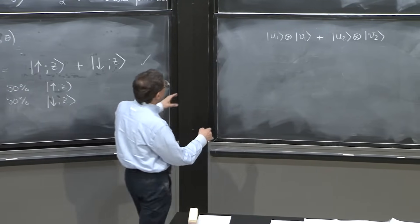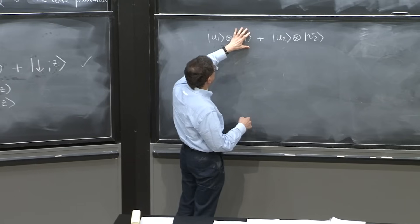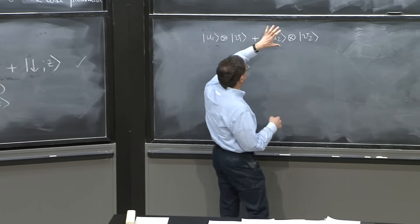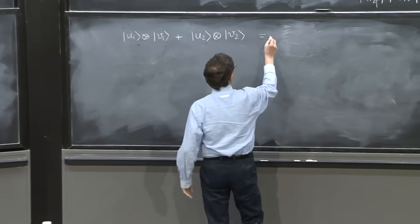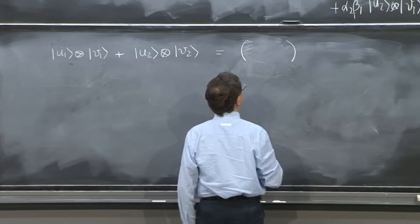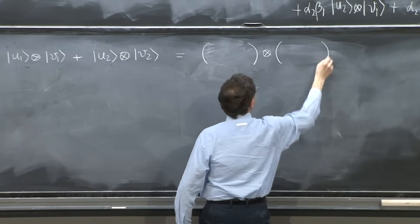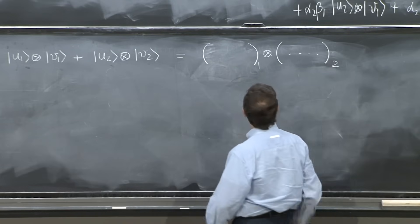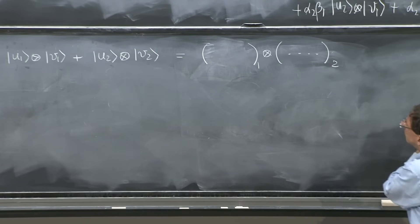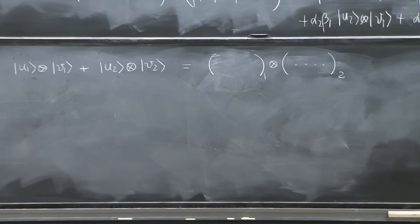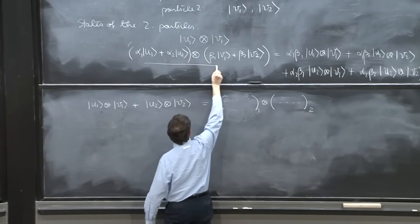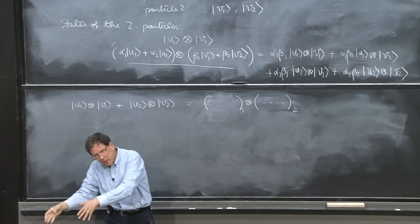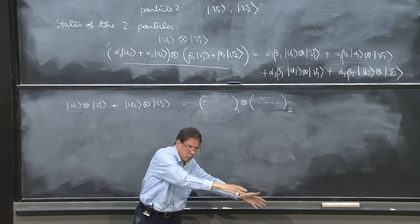You see, I can say when particle 1 is doing u1, particle 2 is doing v1, and when particle 1 is doing u2, this is v2. But can I write this as some state of the first particle times some state of the second particle? Well, let's see. Maybe I can write it in this form. This is the most general state that you can say particle 1 is doing this and particle 2 is doing that.